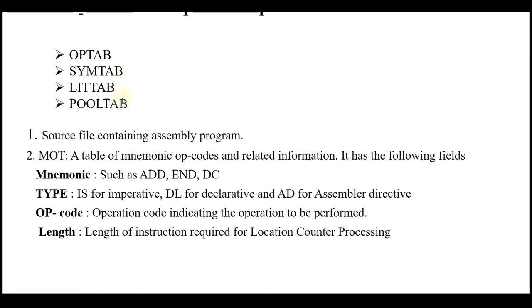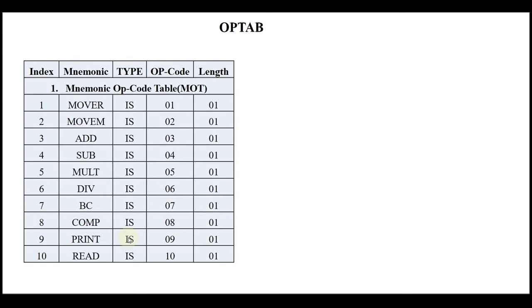The data structures required for pass one are: opcode table (MOT), symbol table (SYMTAB), literal table (LITTAB), and pool table (POOLTAB). In pass one, the source file is in the form of an assembly program. The MOT (mnemonic opcode table) contains related information about each instruction — for example, ADD, DS, DC — along with the type: imperative (IS), declarative (DL), or assembly directive (AD), and the opcode number assigned to each instruction.